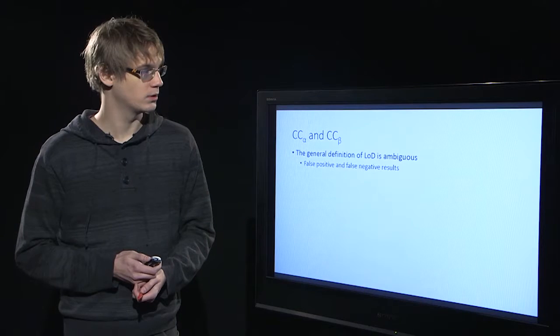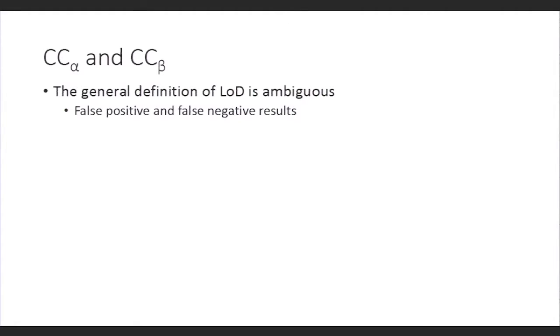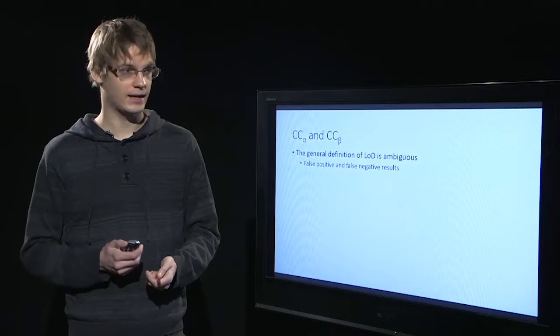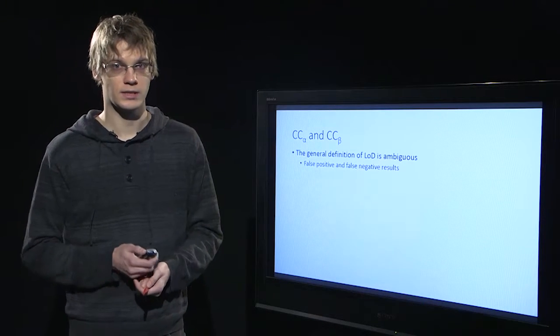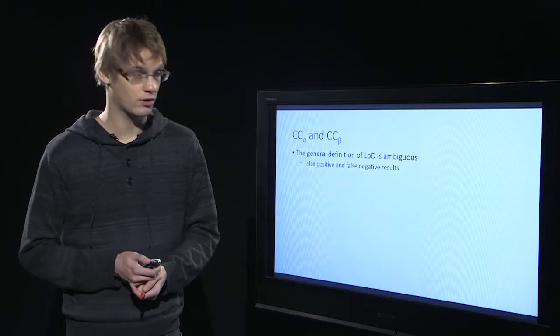CCα and CCβ are a little bit better than limit of detection because some of the ambiguity that is present in limit of detection is taken away. In limit of detection, the false positive and false negative results are really not taken into account in any way, and so therefore the reliability of the results is confusing or ambiguous.